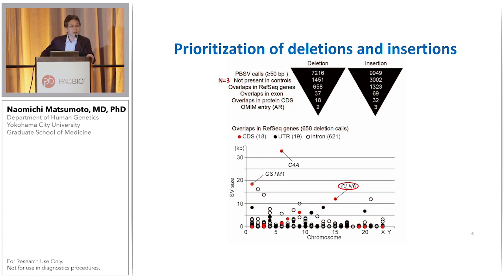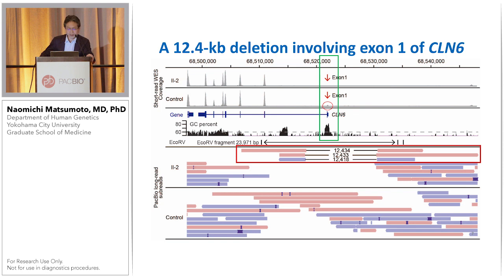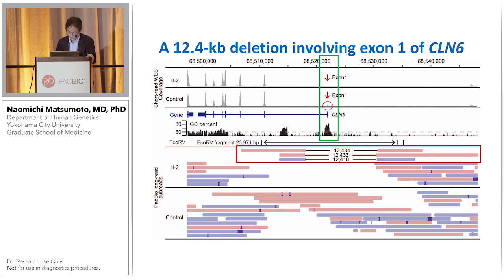We focused on deletions because they are easier to explain. We carefully examined this result and found a 20 kilobase deletion and a 12 kilobase deletion. This is from the exome data — only a bit of sequence piled up in the control, but nothing in the cases. This region is actually the very first exon of CLN6.